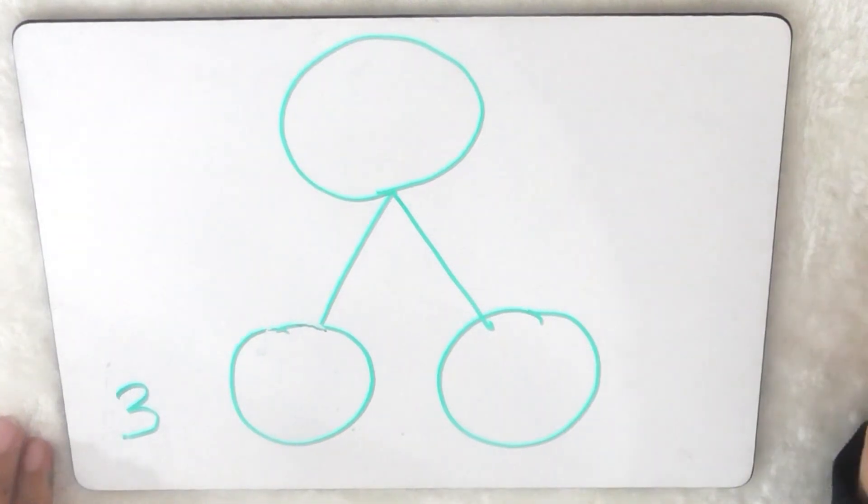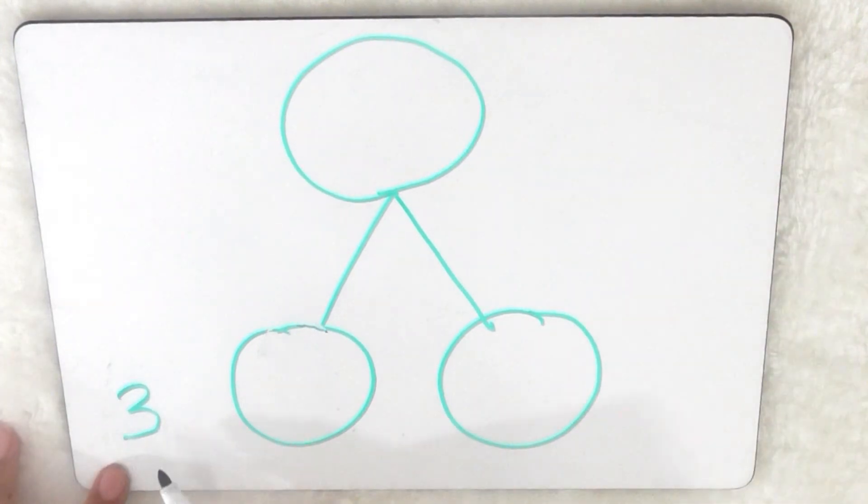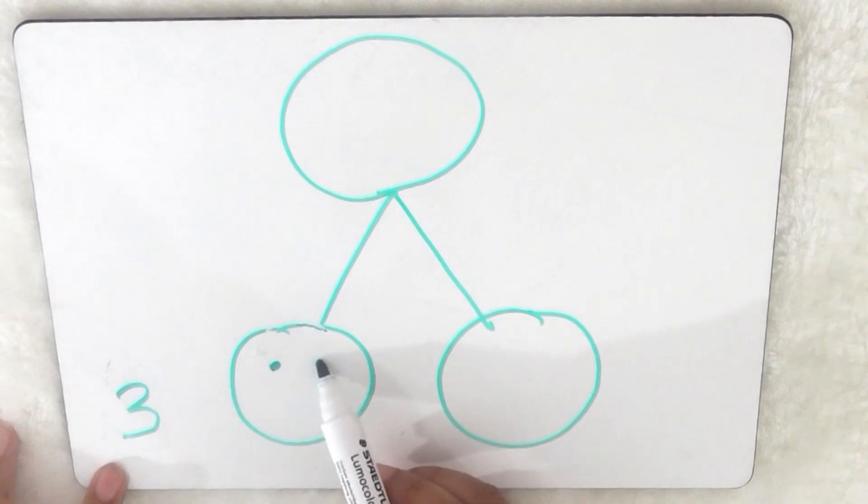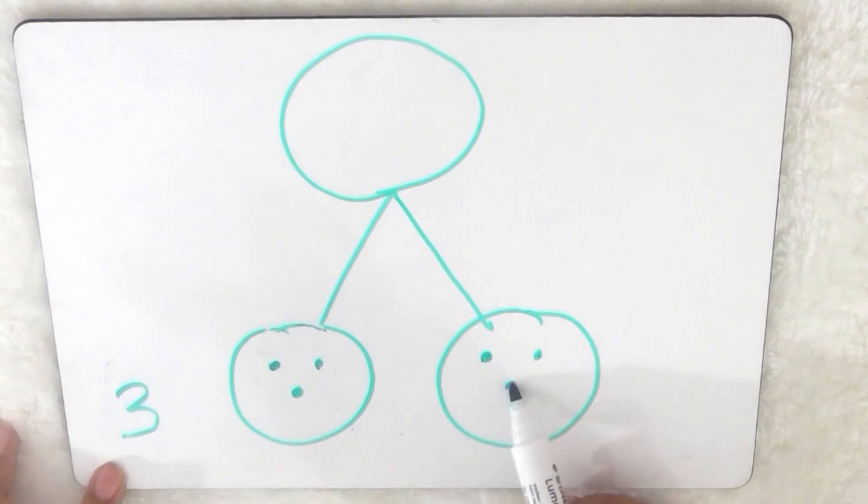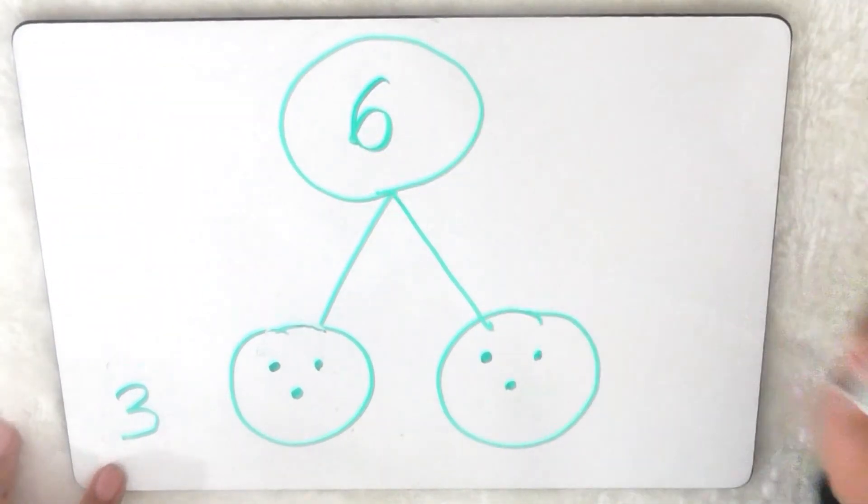Right, now you've had a chance to double the number three, let me show you if you got it right. So because I'm doubling three, I need three here and three here, so one, two, three, one, two, three, and then I count all together, one, two, three, four, five, six. So double three equals six. Let's try another one.